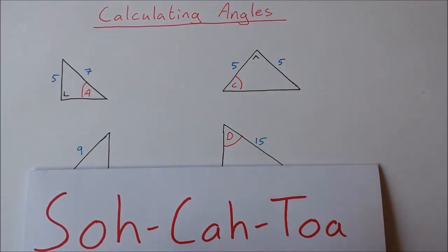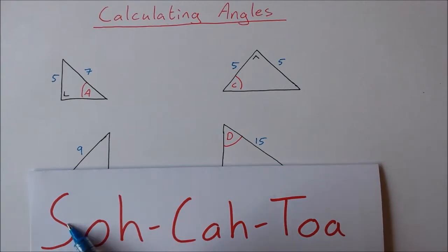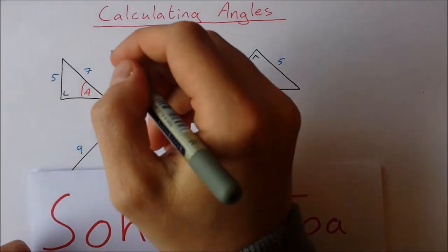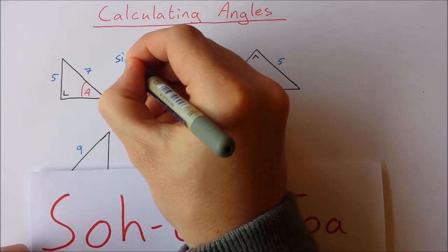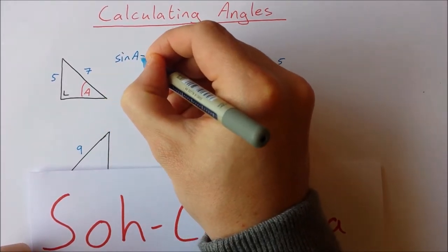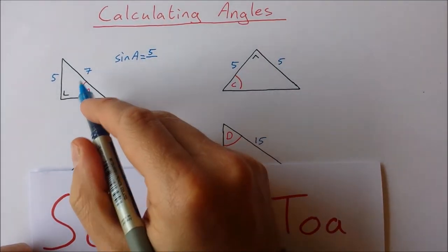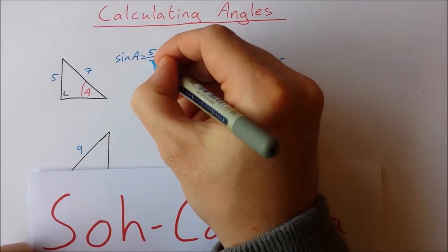Opposite and hypotenuse means we're going to use sine because sine is opposite over hypotenuse. So what we do is we say the sine of our angle A is equal to the opposite which is 5 over the hypotenuse which is 7.